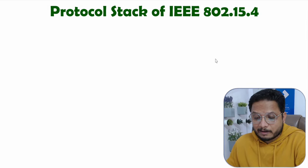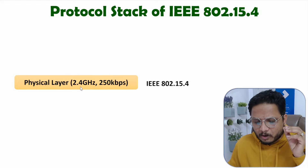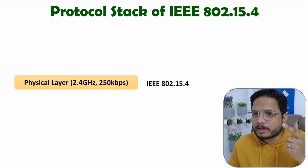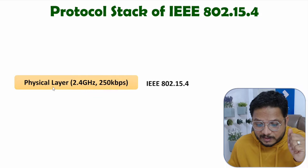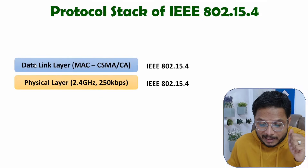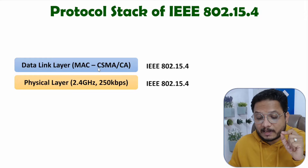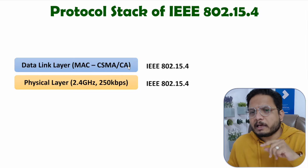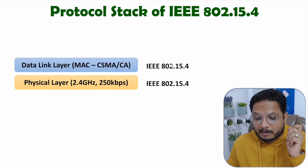Let us see how the protocol stack is structured with this standard. This standard defines the physical layer and the data link layer. At the physical layer, majority of devices operate at 2.4 GHz. In Europe and the US, two additional frequency bands are given, but 2.4 GHz ISM band is also available there, with a max data rate of 250 kbps. At the data link layer, media access control is defined by this standard as per CSMA/CA — carrier sense multiple access collision avoidance.